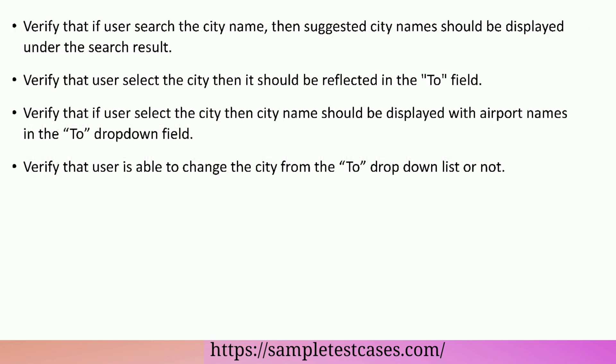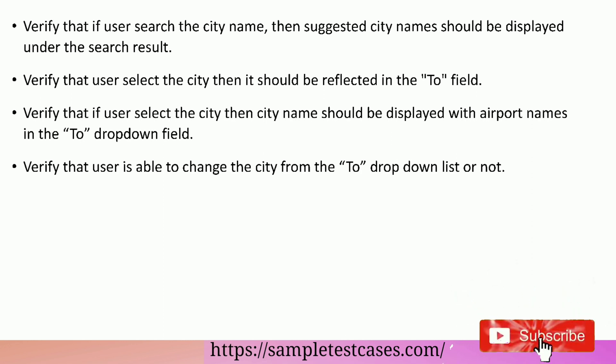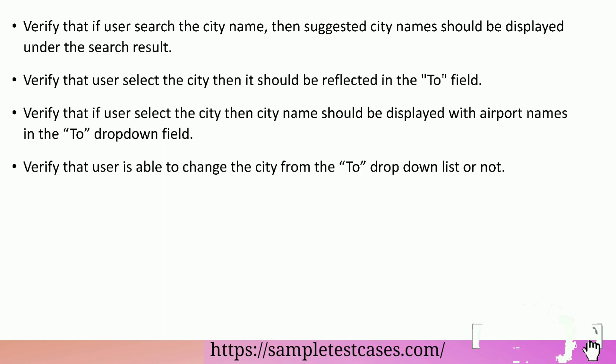Verify that if user searches the city name then suggested city name should be displayed under the search result. Verify that when user selects the city then it should be reflected in the to field, and city name should be displayed with airport names in the to drop-down field. Verify that user is able to change the city from the to drop-down list or not.